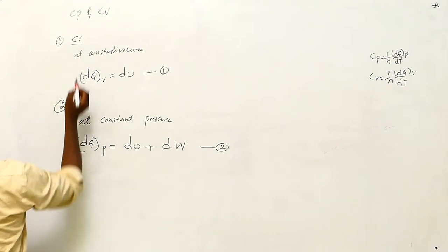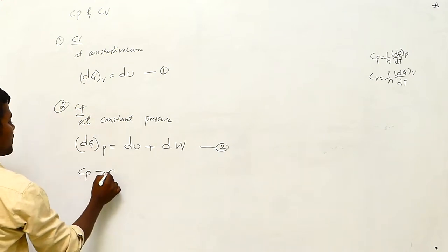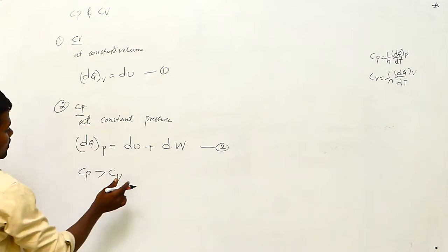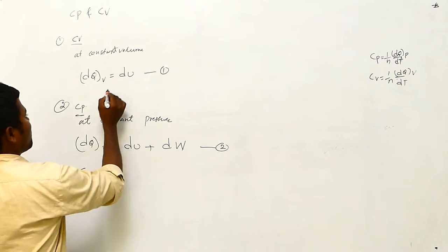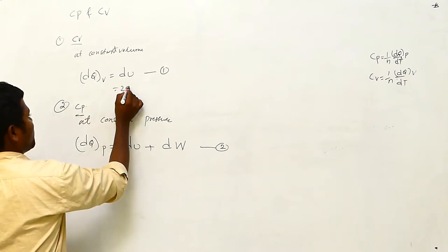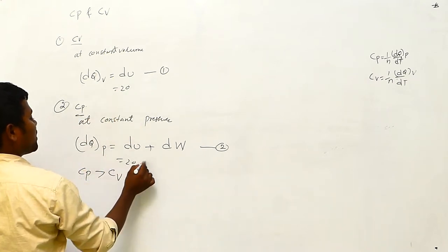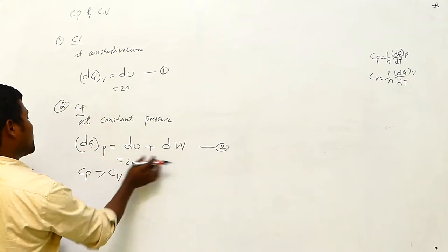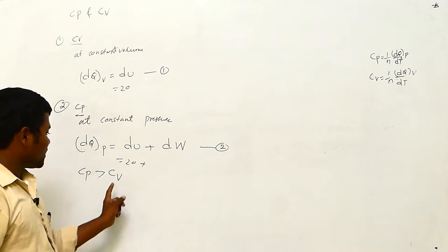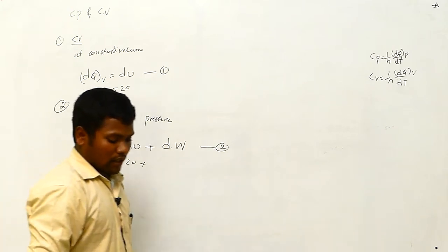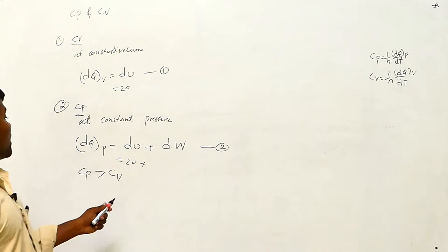Observing these two equations, this first one corresponds to Cv and the second to Cp. Can we say Cp is greater than Cv? Yes — if both have the same base value of 20, the second equation has an additional term due to work done, so Cp is greater than Cv.